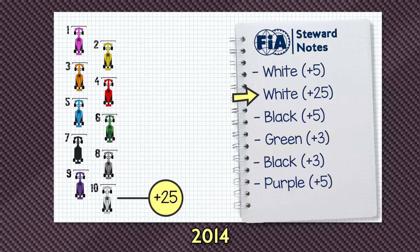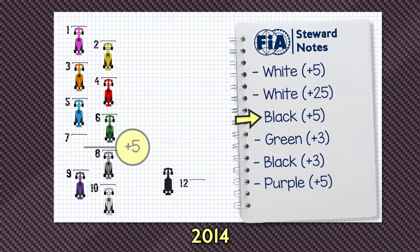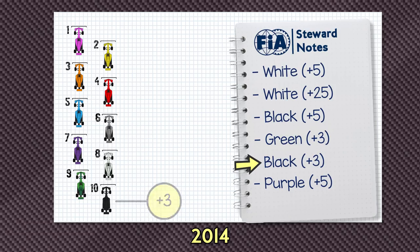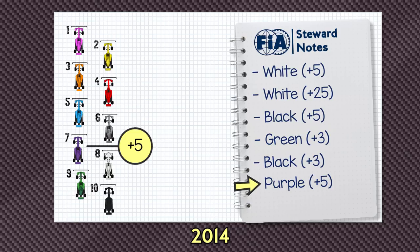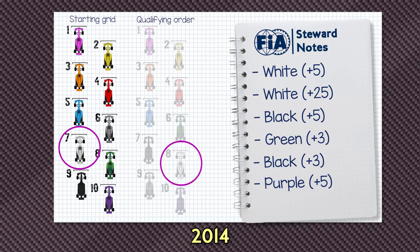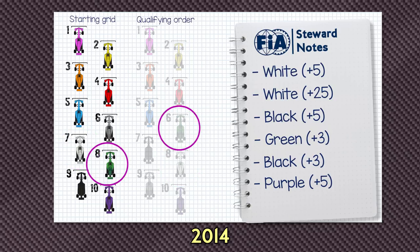White then takes a 25-place penalty and drops to 35th, but of course then shuffles back up to 10th. Black drops 5 places to 12th, everyone shuffles forward including black. Green drops 3 places to 9th. Black takes their second penalty and drops to 13th, but shuffles forward to 10th again. And then purple takes their penalty and drops to 12th. Looking at the final order, we see white's combined 30 penalty places has translated into a 1-place benefit. Green also only drops 2 places instead of 3. At the end of 2014, the FIA decided they weren't happy with this system, as people like white were getting away with strategically taking massive penalties as early as possible in the weekend to make sure their effects were massively reduced.